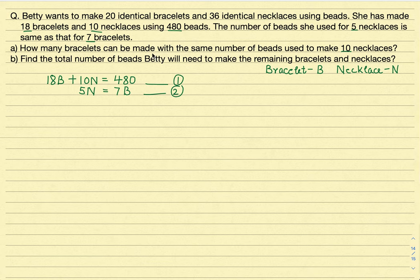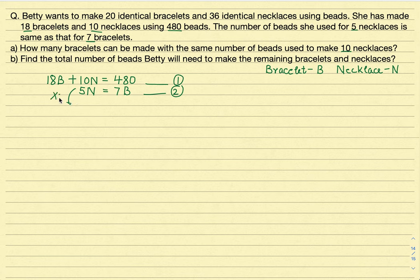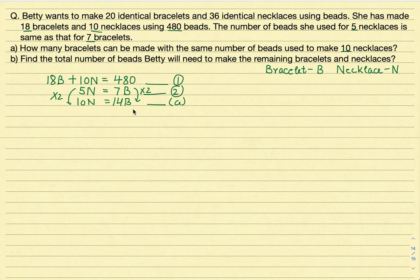Part A asks: how many bracelets can be made with the same number of beads used to make 10 necklaces? We already know that 5 necklaces equals 7 bracelets in bead count. To get from 5 necklaces to 10, we just multiply both sides by 2. So 10 necklaces gives us 14 bracelets. The answer for Part A is 14 bracelets.